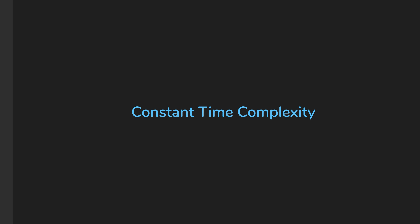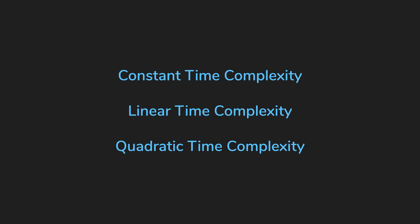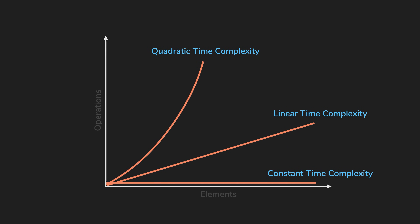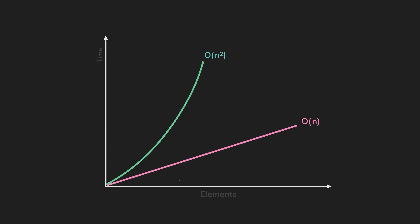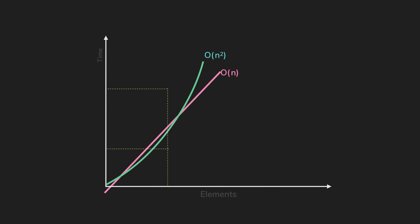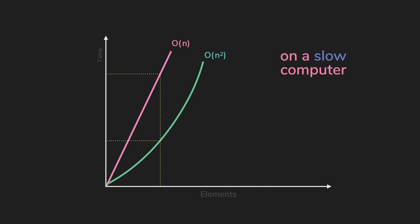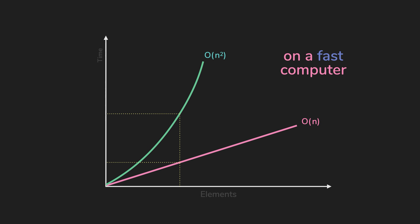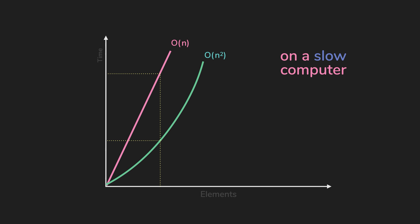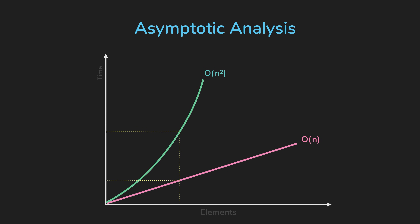Now that we have a better understanding of time complexity, let's look more into what asymptotic analysis means. We've looked at three types: constant, linear, and quadratic. When we plot them together, you can compare two algorithms. Linear time complexity runs faster than quadratic, and this seems right. But if you run a linear time complexity algorithm on a really slow computer, the plot might make quadratic look faster. The runtime shouldn't change depending on external factors like computing power, so we need a generalized way of expressing how fast an algorithm is — which is where asymptotic analysis comes in.